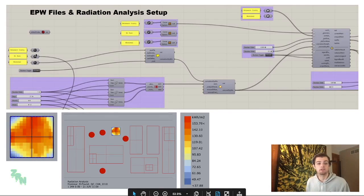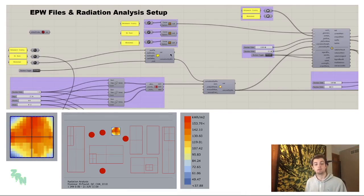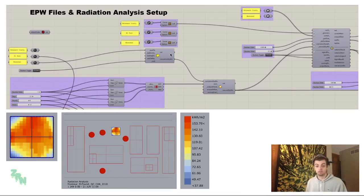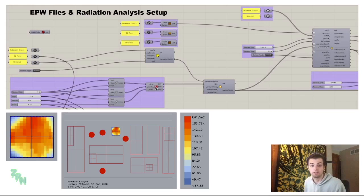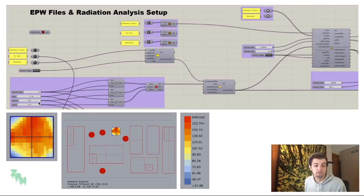We then take these EPW files and put them into a cumulative sky matrix, which will give us the sun's radiance for every hour of the year. But we don't want every hour of the year — we want one specific hour or day. So we take the DOY and HOY, which is the day of year and hour of year, and input what day and time we want. For instance, I put June 21st at 12 o'clock.